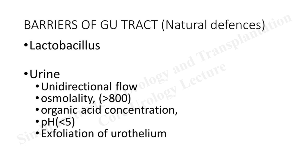Barriers of the genitourinary tract include: in females, lactobacilli living in the vagina creating an acidic pH by converting glycogen to lactic acid — the more acidic the pH, the more unfavorable for bacterial growth. UTIs are less common in sexually inactive females; sexual activity can disrupt the lactobacillus system. The urine itself is a host mechanism due to its unidirectional flow from the kidney to the bladder, which is essential in preventing infections.